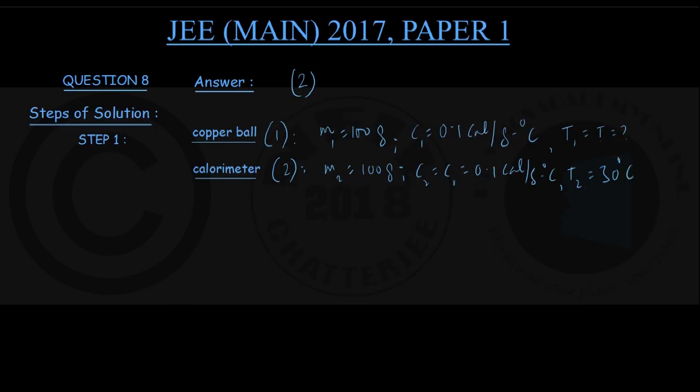And also one more item, water, this is item number 3. Its mass M3 is 170 gram. Specific capacity of water C3 is the well-known value 1.0 calorie per gram per degree Celsius. The temperature T3 is the same as T2, the room temperature 30 degree Celsius. In addition, you have the final temperature of the system Tf, that is 75 degree Celsius. We're supposed to find out the initial temperature T of this copper ball.